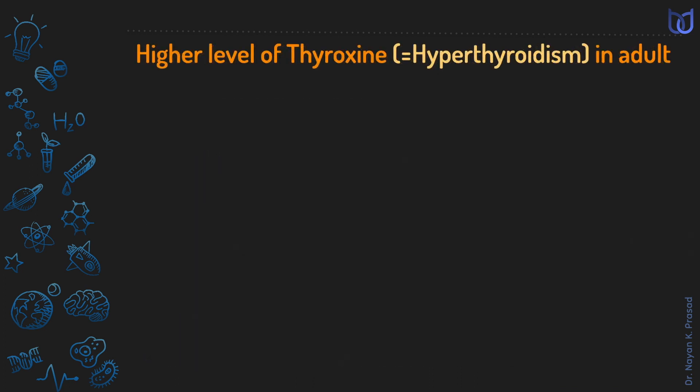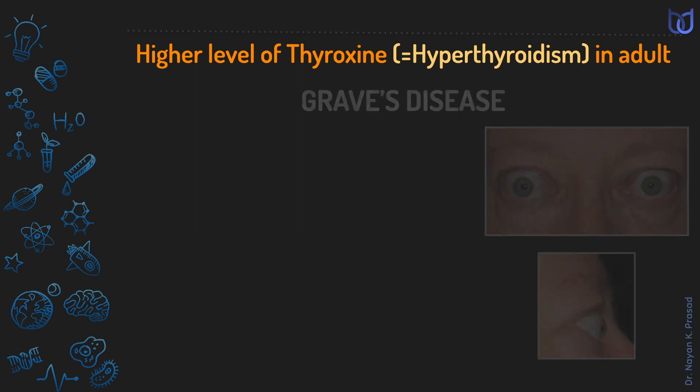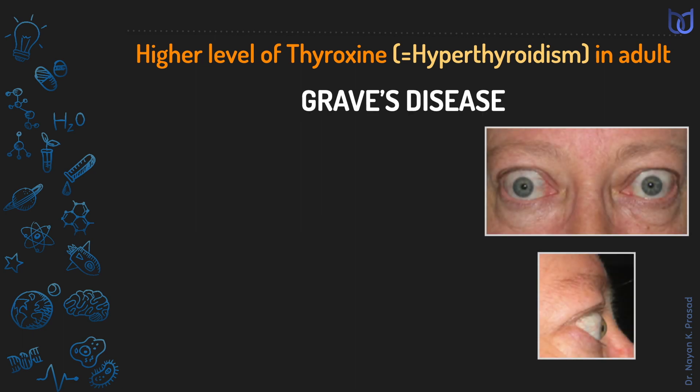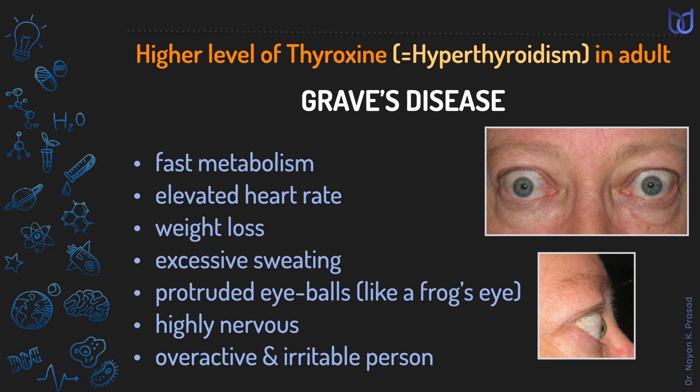A higher level of thyroxine is called hyperthyroidism. Hyperthyroidism in adults leads to the disease known as exophthalmic goiter or Graves' disease. It includes symptoms like fast metabolism, elevated heart rate, weight loss, excessive sweating, and protruded eyeballs like a frog's eye. The individual becomes highly nervous, overactive, and irritable.